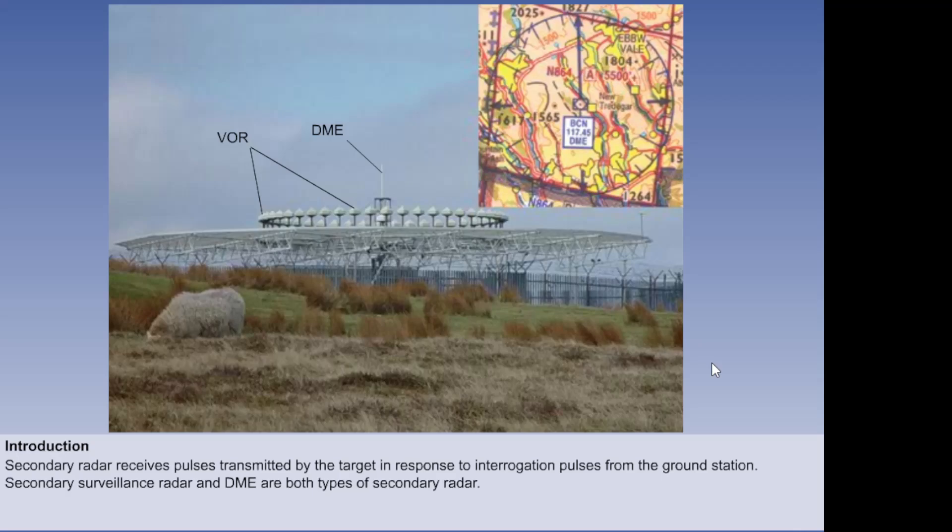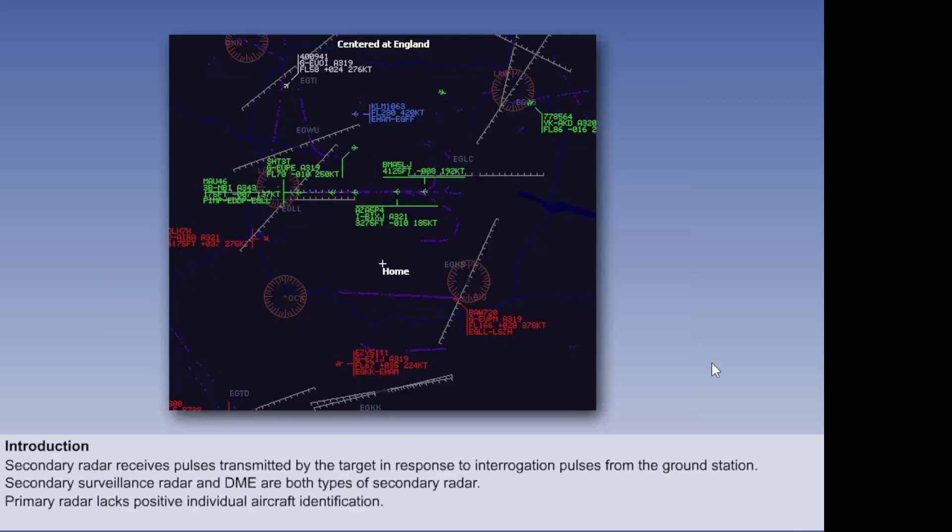DME is another, which we have looked at in its own lesson. Air Traffic Control use both primary radar and SSR to track the progress of aircraft. Primary radar provides position information, since it is more accurate than SSR. But the main advantage of SSR is that it can provide positive individual aircraft identification. In addition, SSR requires less power, since it does not rely on reflected pulses.